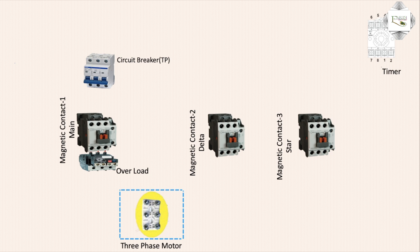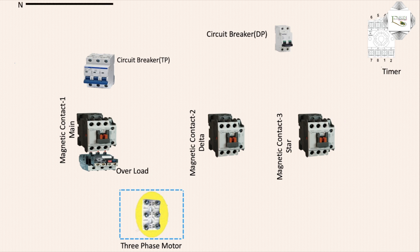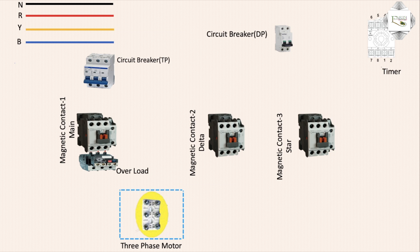Pin 8 is common, pin 6 is NO (normally open), pin 5 is NC (normally closed). Circuit breaker DP means double-pole circuit breaker. Using switching terminal and TP for motor power supply — three-phase line: red is first phase, yellow is second phase, blue is third phase.